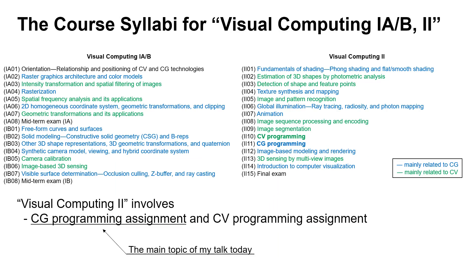These are the course syllabi for visual computing 1a, 1b, and 2. Visual computing 1a and 1b focus on fundamentals of 2D and 3D processing, while visual computing 2 focuses on more advanced topics. Blue and green colors indicate the lectures mainly related to computer graphics and computer vision respectively. The numbers of graphics and vision lectures are balanced because most topics are closely tied to each other. On top of that, visual computing 2 involves two assignments, each focused on graphics and vision.